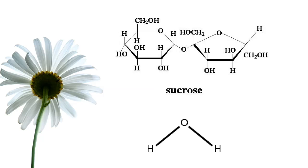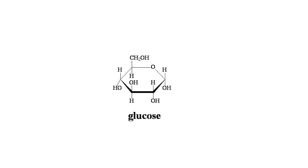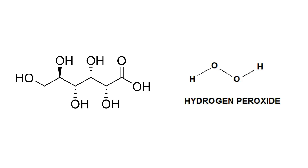Enzymes that the bee produces turn the sucrose into glucose and fructose. A small amount of the glucose is attacked by a second enzyme, glucose oxidase, which is then converted into gluconic acid and hydrogen peroxide.